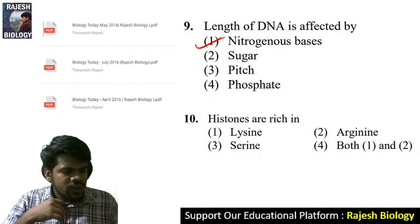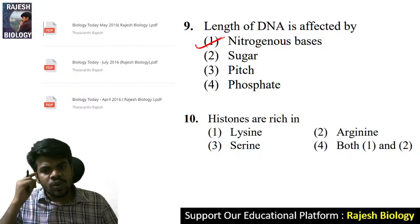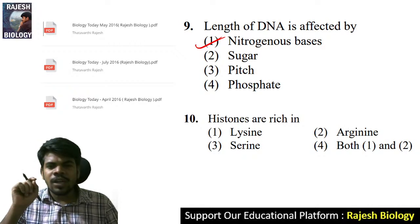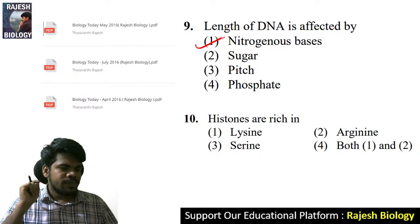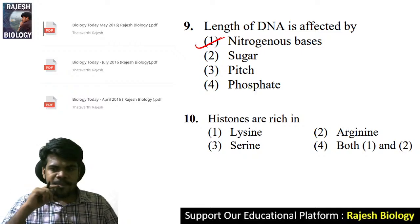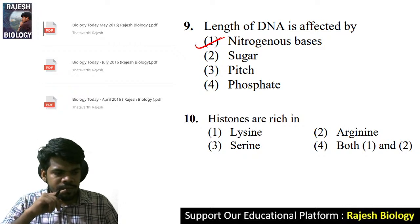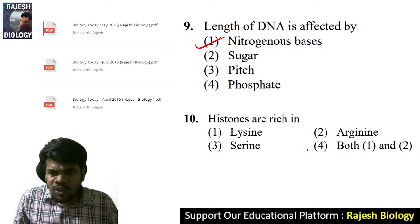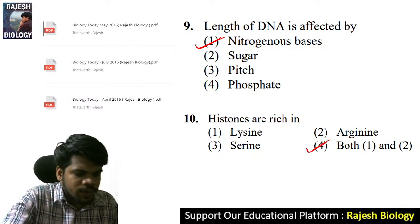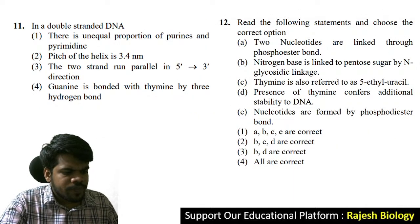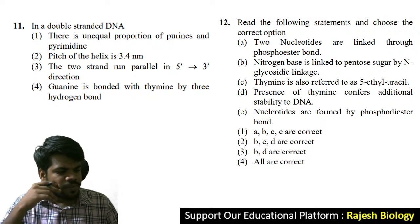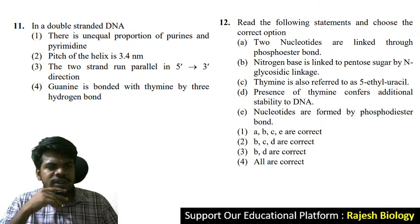The tenth question: histones are rich in what? The right answer is both lysine and arginine — both are present. The right answer is option four. Jnaneshwari, very good.